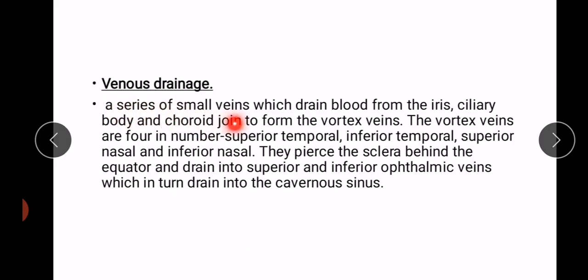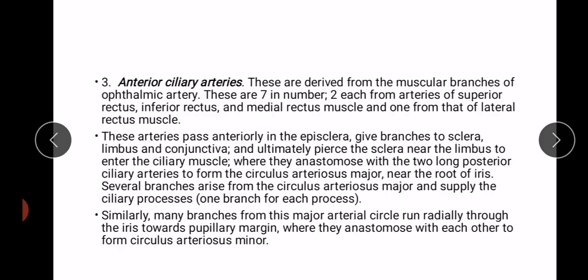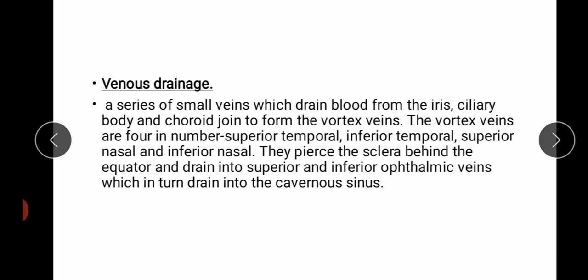Venous drainage: a series of small veins drain blood from the iris, ciliary body, and choroid to form the vortex veins. The vortex veins are four in number — superior temporal, inferior temporal, superior nasal, and inferior nasal. They pierce the sclera behind the equator and drain into the superior and inferior ophthalmic veins, which in turn drain into the cavernous sinus.